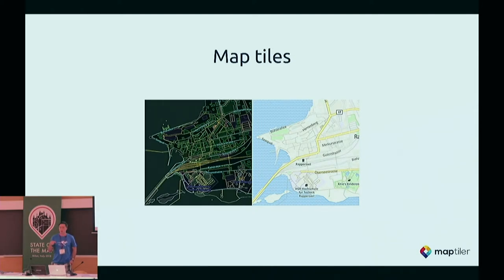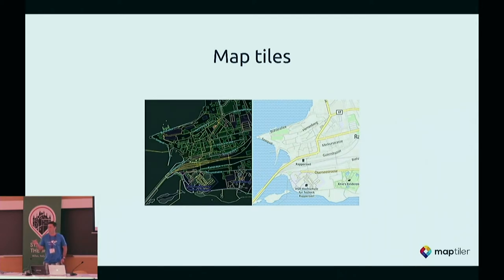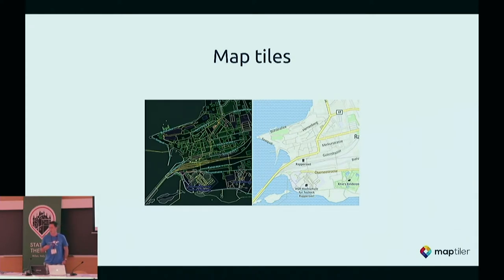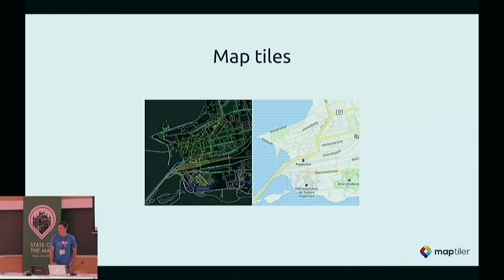Vector tiles have advantages such as caching and faster speed. They may contain the raw data so the client can dynamically switch language depending on the browser or device settings, change colors, adjust the style depending on preference, or even customize the map for the person — for example, highlighting your own home or certain features based on history. The map is very dynamic thanks to vector tiles.